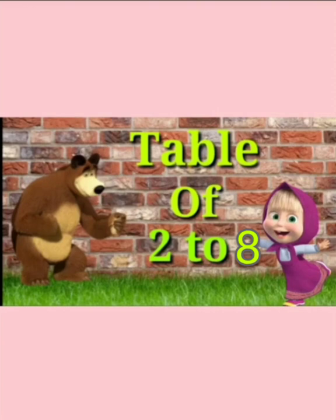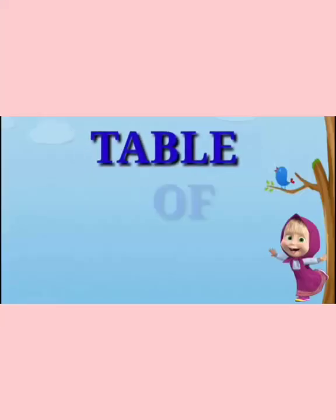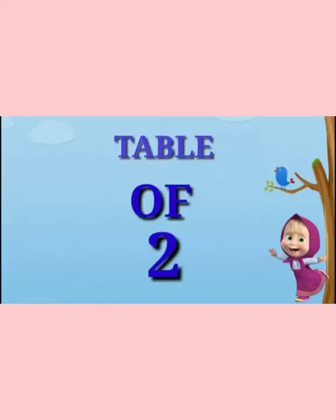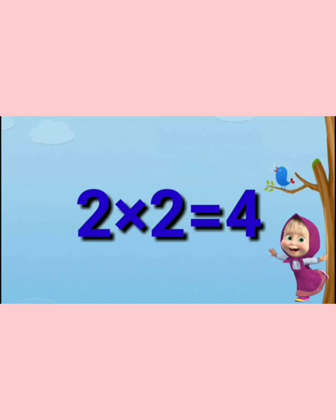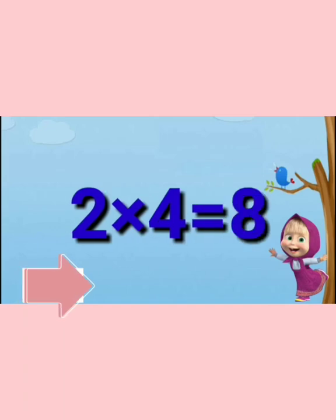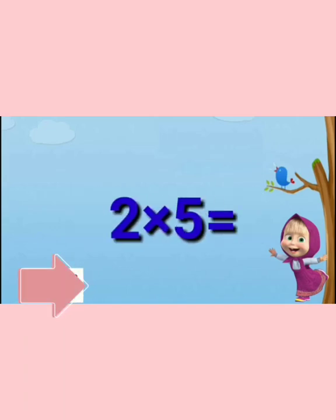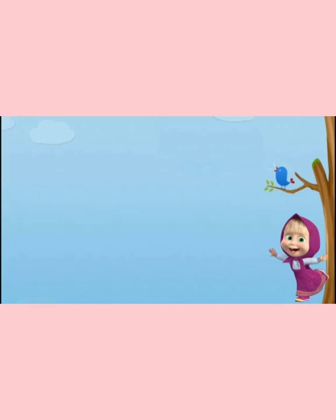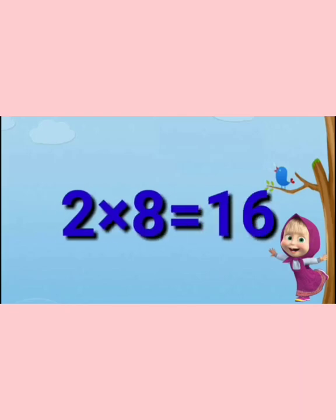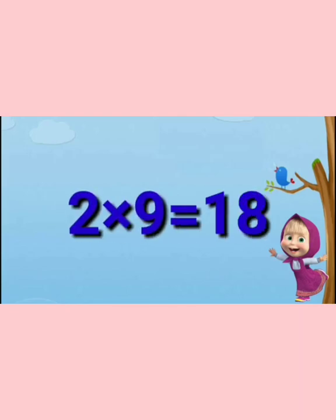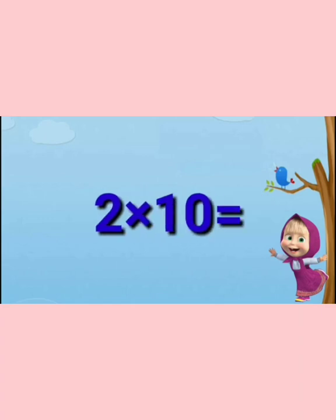Now you have to speak the tables with me. First table is table of 2: 2 ones are 2, 2 twos are 4, 2 threes are 6, 2 fours are 8, 2 fives are 10, 2 sixes are 12, 2 sevens are 14, 2 eights are 16, 2 nines are 18, 2 tens are 20.